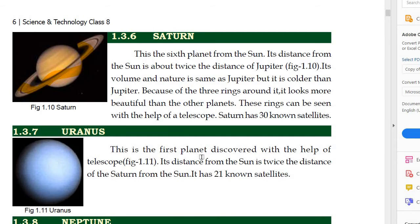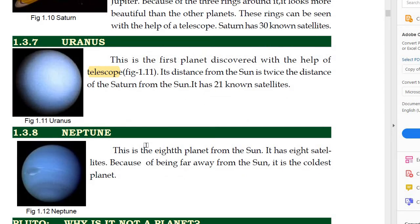Next is Uranus. Uranus is the first planet discovered with the help of a telescope. Its distance from the sun is twice the distance of Saturn. It has 21 known satellites. Next is Neptune, the 8th planet from the sun. It has 8 satellites, and because of being far away from the sun, it is the coldest planet.